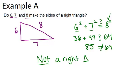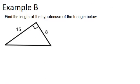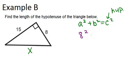Alright, let's go to example B. Here we're asked to find the length of the hypotenuse of the triangle below. So let's call the hypotenuse x, and remember our Pythagorean theorem, a squared plus b squared equals c squared, where c is always the hypotenuse. So in this case, our formula is going to be 8 squared plus 15 squared equals x squared.